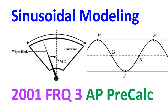There will be four free response questions on the AP Precalculus exam. This video is modeled after FRQ3. Let's pretend it's from the 2001 AP Precalculus exam. This problem is about sinusoidal modeling, which means modeling a real-world situation with a sine function or a cosine function.